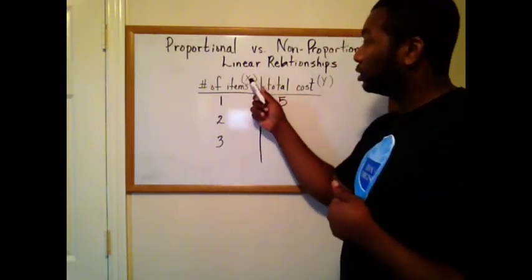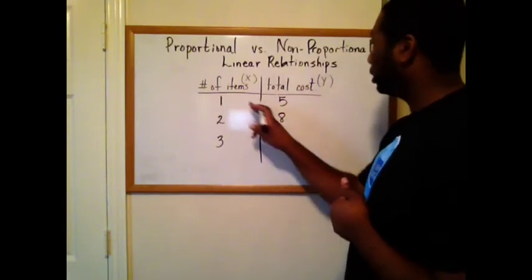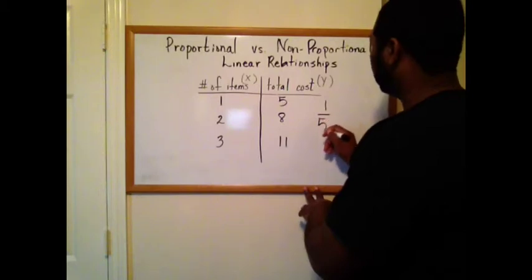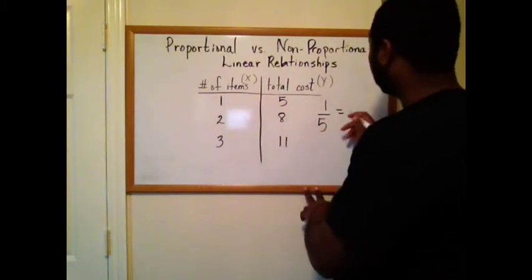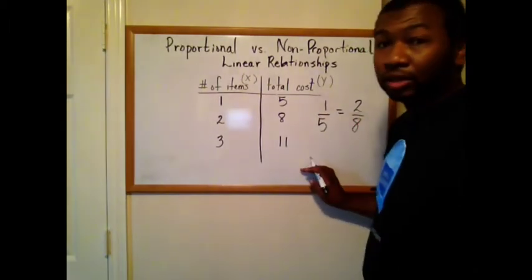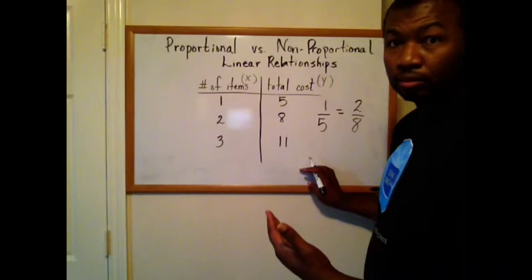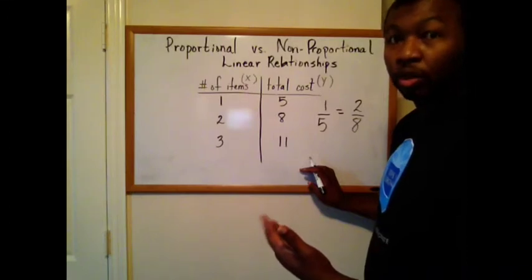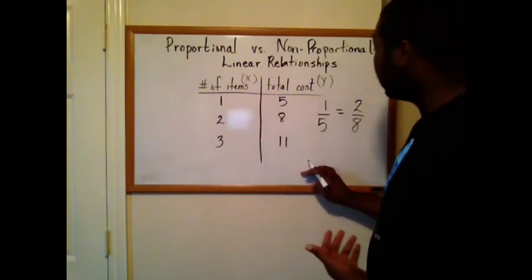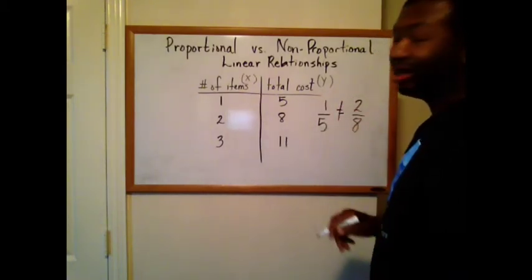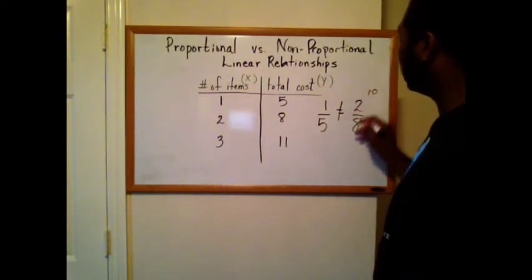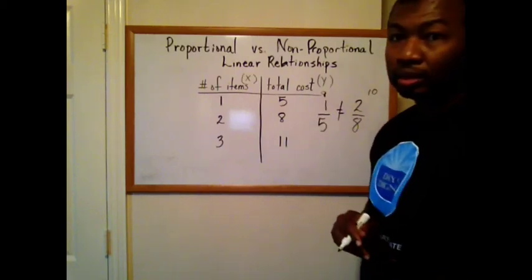And I'm going to do it like I did it before. Create a fraction. What's the ratio of x to y? Here I would have one over five. Here I would have two over eight. So I ask you, is it proportional? No, really, is it proportional? So you butterfly method to check it and you see that these are actually not proportional. 5 times 2 is 10. 8 times 1 is 8. That's all there is to it.